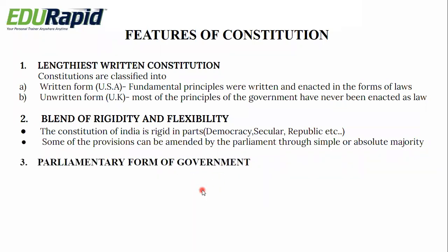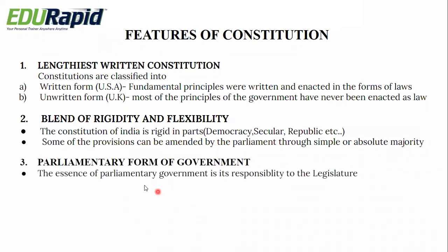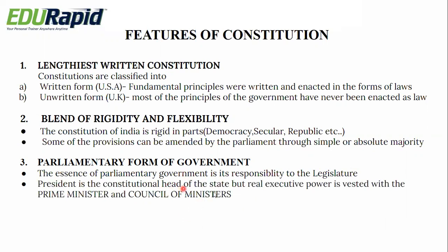Next is the parliamentary form of government. The essence of parliamentary government is its responsibility to the legislature. Under Article 75, the executive is collectively responsible to the legislature — that is what makes the parliamentary form of government. The president is the constitutional head of state, but real executive power is vested with the prime minister and council of ministers.